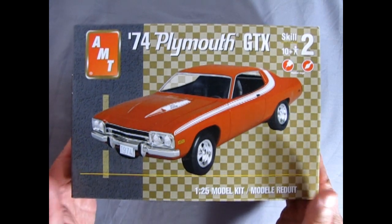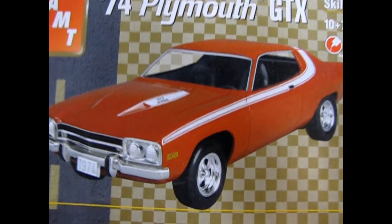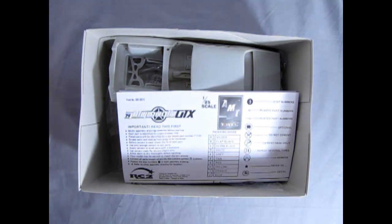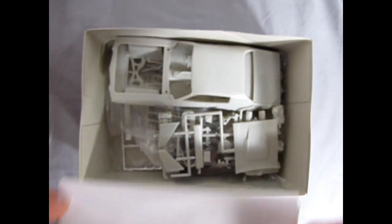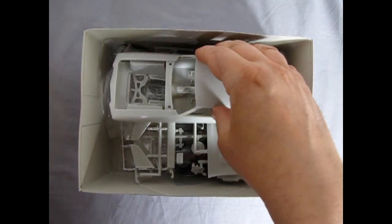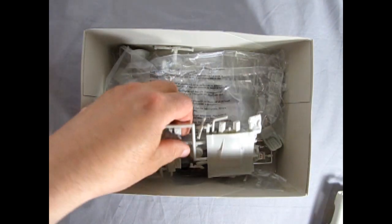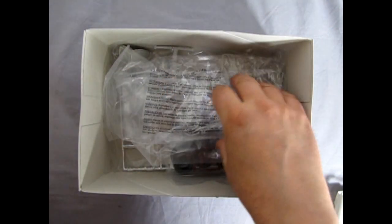And now we'll take the lid off our 74 Plymouth GTX and see what's in the box. Inside the model kit you of course get a sheet of instructions, a decal sheet which we'll take a look at at the end of this video, the body interior bucket and chassis.